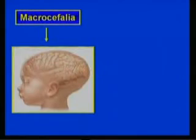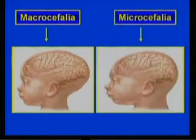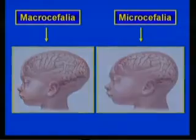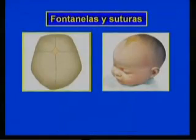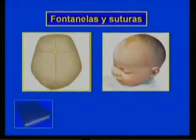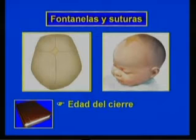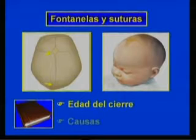Para detectar el tamaño excesivo de la cabeza o macrocefalia y la microcefalia o cabeza demasiado pequeña, ambas por lo general secundarias a algún trastorno cerebral, tendrán que evaluar el perímetro cefálico. Las fontanelas y suturas las examinarán con cuidado. En el libro de texto, pueden encontrar la edad del cierre de la fontanela anterior y posterior, así como las patologías que cursan con alteraciones de las mismas, ya sea tensa y abombada o deprimida.